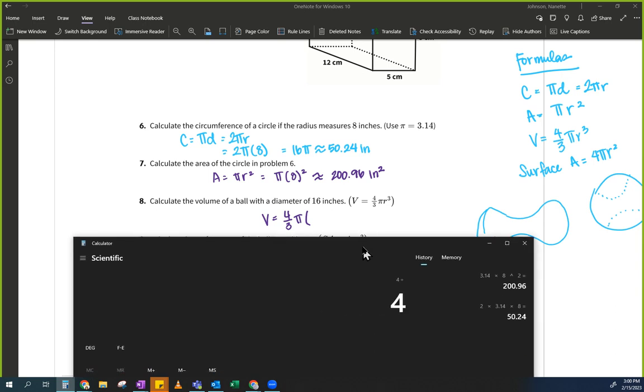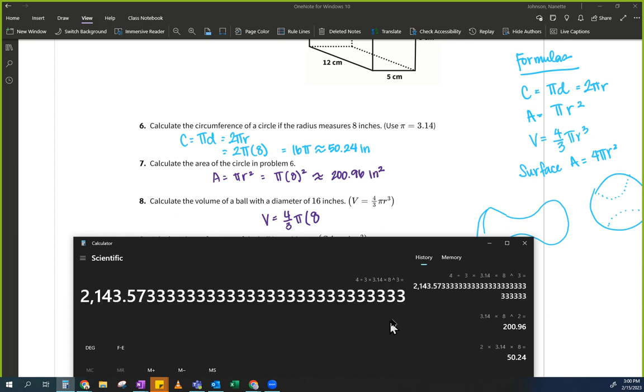So again, I'm going to plug that into my handy dandy calculator. Let's see. I'm going to do it all at once. Four thirds times pi, which is 3.14. They're saying, and then times eight to the third. There's my equation. I don't know if you could see it. Four divided by three times 3.14 times eight to the third. I hit enter.